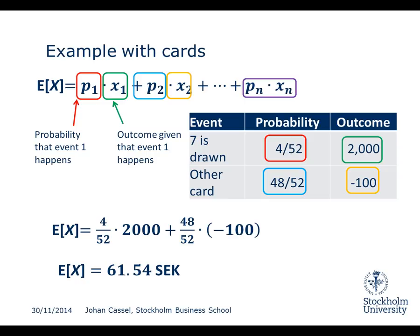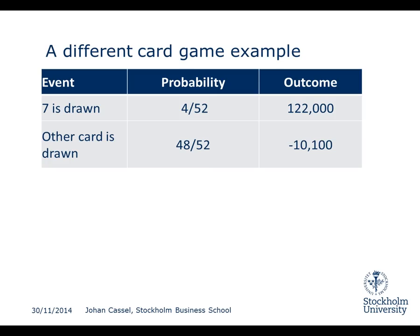Since we only had 2 events in this case, the formula ended there. But otherwise, the three dots mean you should add the third event — the probability of the third event times the outcome of the third event — plus the probability of the fourth event times the outcome if that event happens, and so on, in case you have more events.